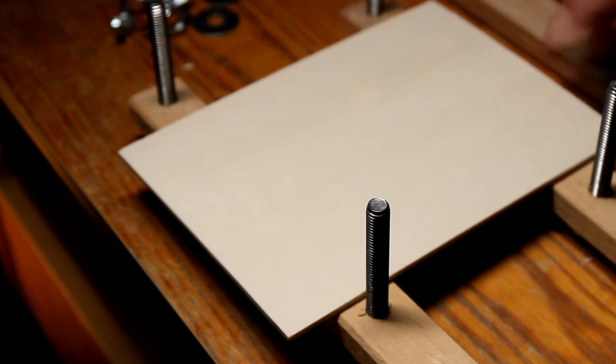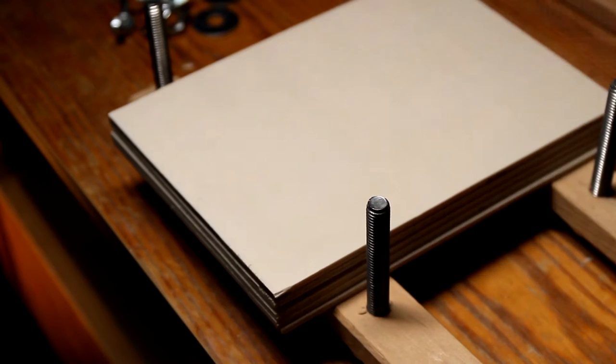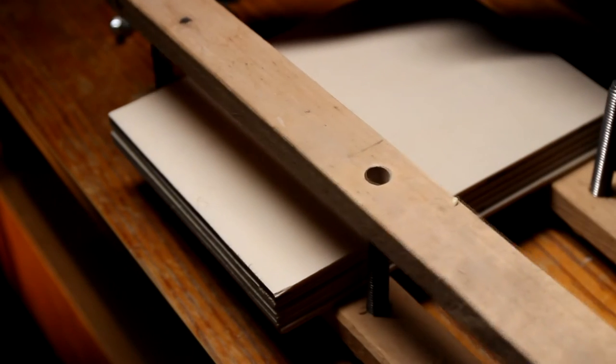Both layers will provide even pressure for the glued pieces in between. The space between the two bars should not exceed 10 inches. If so, simply add another bar.